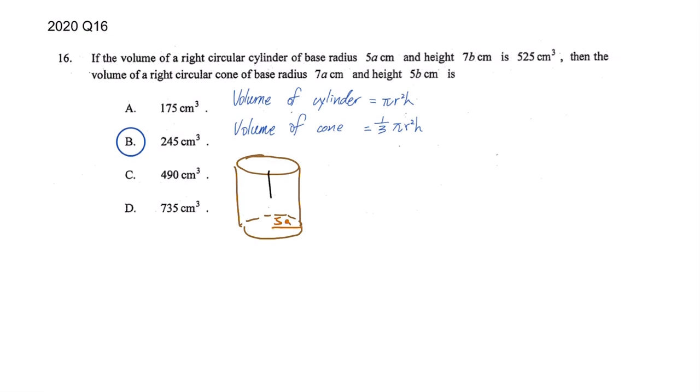So the base radius here is 5a, and then we also know that the height is 7b, and the volume for this is 525 cm³. Okay, this thing, this thing, this thing - done.